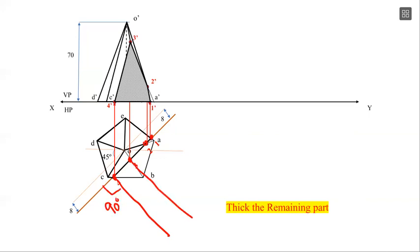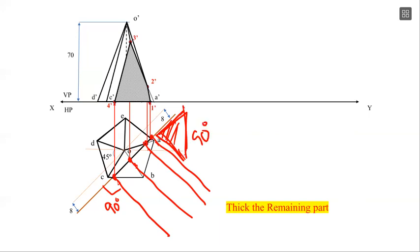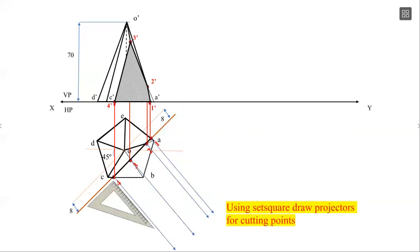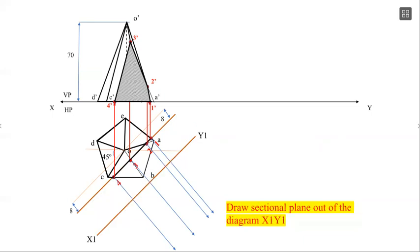If you are using the cutting plane, you should drop perpendiculars at 90 degrees. If you are using the sectional plane, you will see the cutting plane. Drop it in the 90-degree direction. If you have any problem with this section, you can drop it in the diagram. The reference line is named x1 and y1. If you mark it, you can mark the cutting points in the true shape.